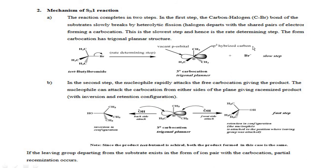The formation of the carbocation in the first step occurs via heterolytic bond cleavage. In tertiary butyl bromide, the carbon carries a positive charge and bromide carries a negative charge — this is the cause of carbocation formation. This is the slowest step, so it is the rate-determining step.